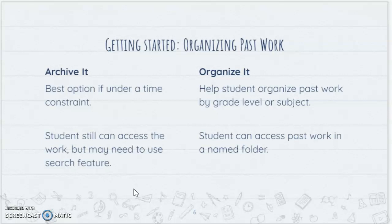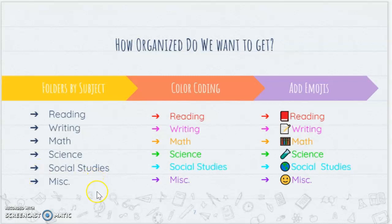Getting started: take a look at what their Google Drive looks like first, and help them either dump everything in a past work folder or organize that past work by grade level or by subject. Once the Google Drive is cleaned up, it's time to get the student ready and organized for this year in your class. Ask yourself how organized you want to get — do you want folders for each subject, color-coded folders, or do you want to take it to the next level and add emojis in front of folder names?